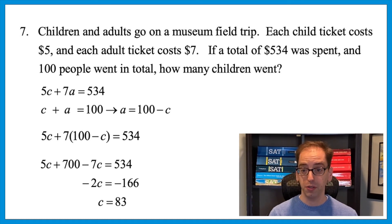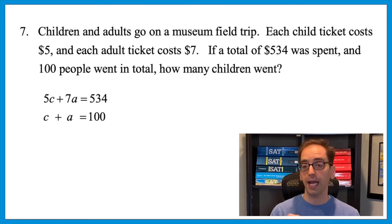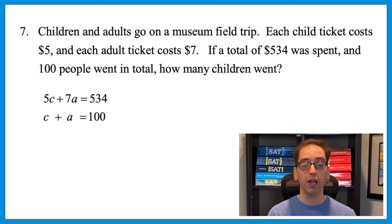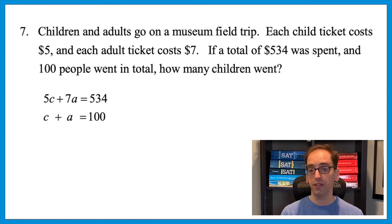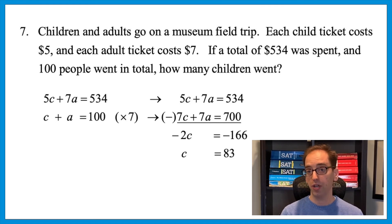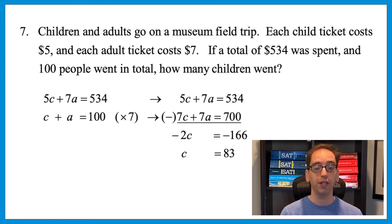Elimination also works. Stack the equations: to eliminate a, multiply the second equation by 7, giving 7c plus 7a equals 700. Subtracting from the first equation: 5c minus 7c gives negative 2c, 7a minus 7a cancels, and 534 minus 700 gives negative 166. Dividing by negative 2 gives c equals 83. Both approaches give the same answer — 83 children — as long as you do the math correctly.